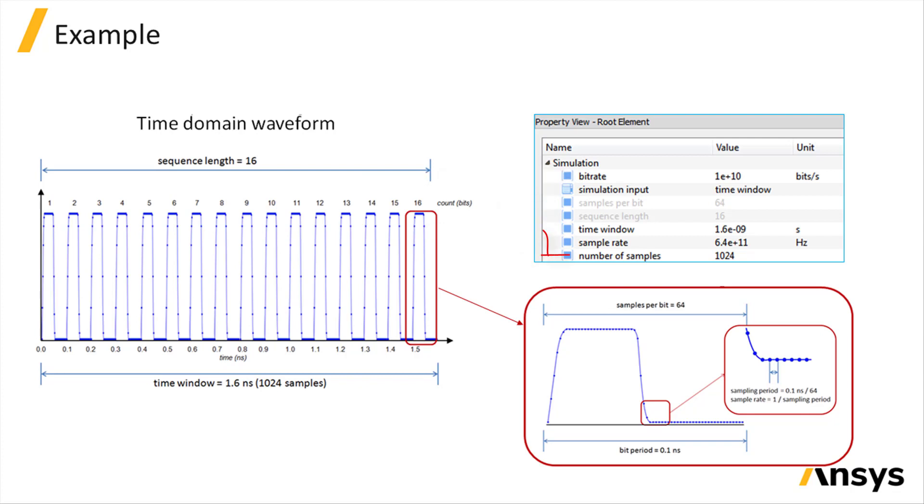The sample rate is set to 6.4 times 10 to the 11 hertz. So the number of samples is 1024, as it's calculated as the time window times the sample rate.